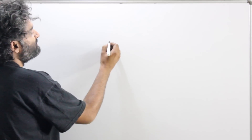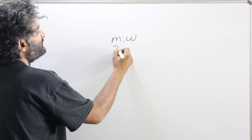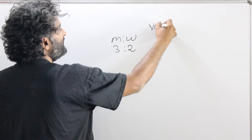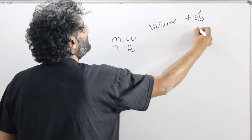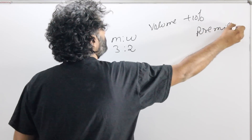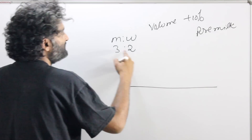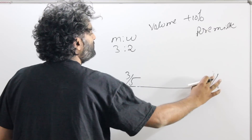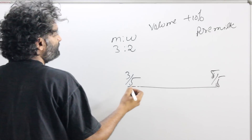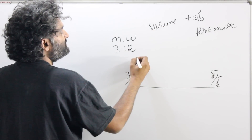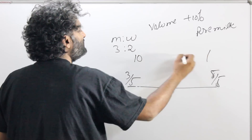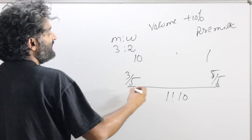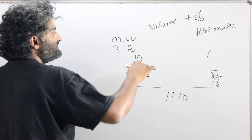Say there is a milk and water solution where the ratio of milk and water is 3:2 and the volume of the solution is increased by 10% by adding pure milk. You can do this by the scale method: the rate of milk is 3/5, the rate of pure milk would be 5/5, and the volume was increased by 10%, meaning in 10 liters of solution one liter was added, so the ratio is 10:1. Convert that ratio into 1:10 and you get your answer.